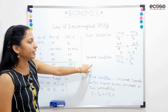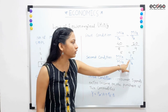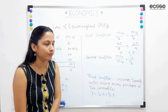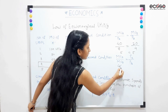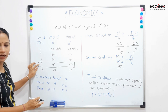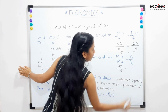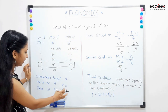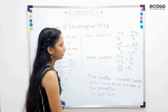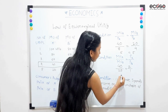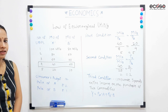Now, second condition states that the marginal utility of A divided by marginal utility of B is equals to the price of A divided by price of B. Again, values put karne hain. Marginal utility of A is given 40 at the fourth unit, and marginal utility of B is 20. So, 40 divided by 20 is equals to price of A to price of B — 2 divided by 1. Answer aayega 40 divided by 20 equals 2, is equals to 2. Matlab, yahan pe second condition bhi satisfy ho rahi hai.